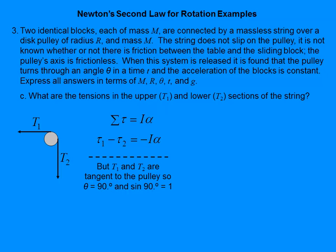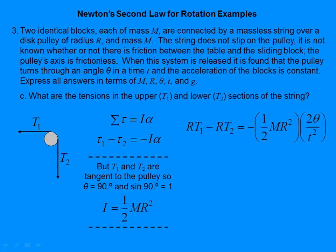T1 and T2 are tangent to the pulley, so theta is 90° and sine of 90 is 1, meaning each torque is simply RF. The rotational inertia is ½MR². Plugging everything in: RT1 − RT2 = ½MR²·(−2θ/t²). One R cancels from every term, and the ½ and 2 cancel, leaving T1 − T2 = −Mθr/t² ... wait, solving we get T1 = T2 − Mθr/t².